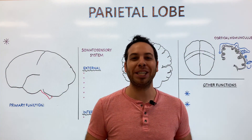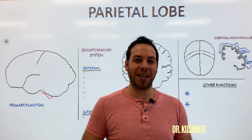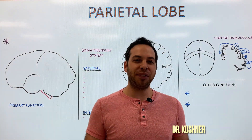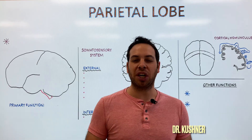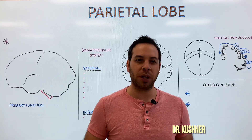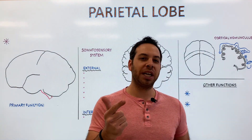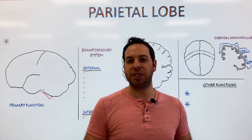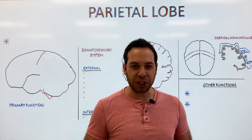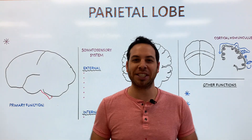Alright guys, welcome to Psych Explained. In this video, we're going to discuss the parietal lobe — where it's located, what it does, and what would happen if there was damage to this region. So let's get started.